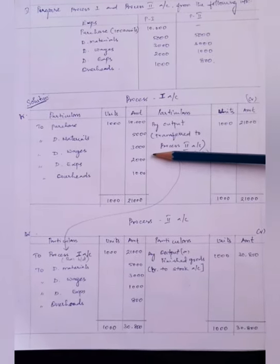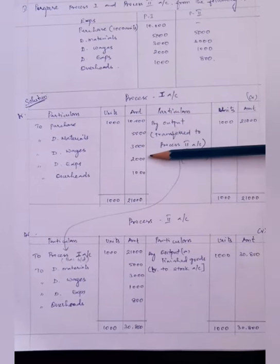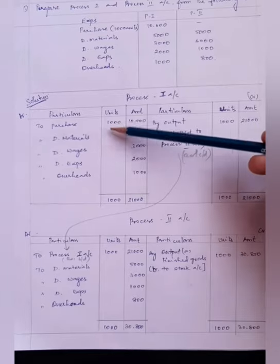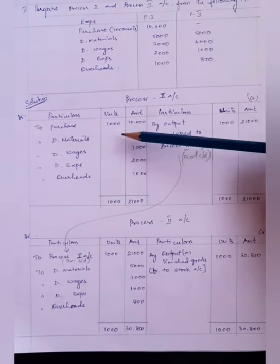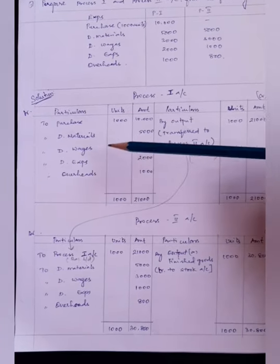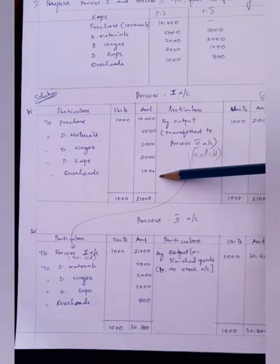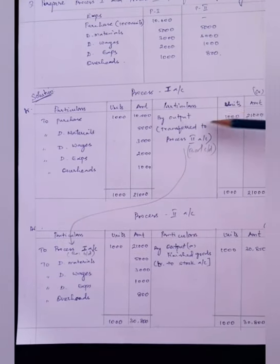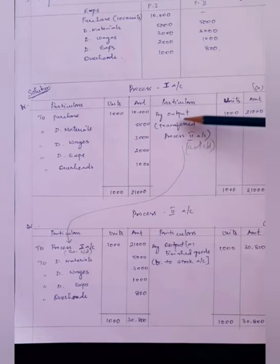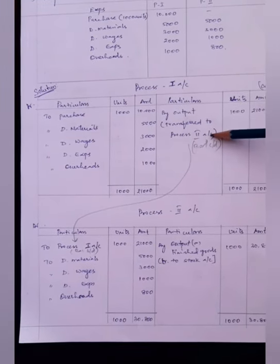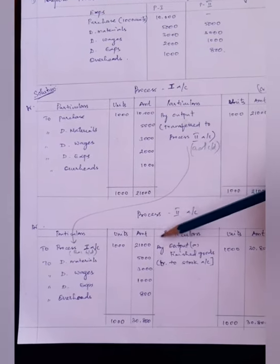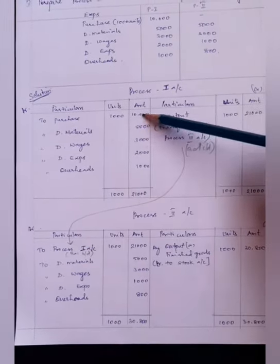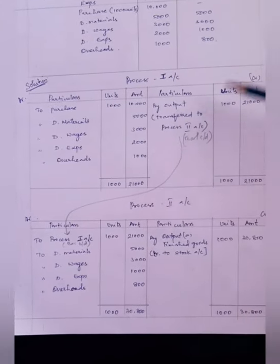First, we prepare a process 1 account — a simple ledger with a debit side and a credit side. On the debit side, all expenses: raw material purchased 1,000 units costing Rs. 10,000; material cost Rs. 5,000; wages Rs. 3,000; expenses Rs. 2,000; overheads Rs. 1,000. Total input units: 1,000. On the output side, the same 1,000 units — the balance carried forward — is transferred to process 2 account, since the output of process 1 is the input for process 2. The total cost of process 1 is Rs. 21,000.